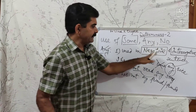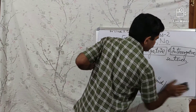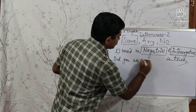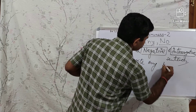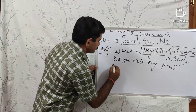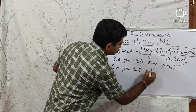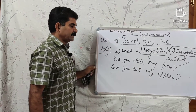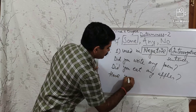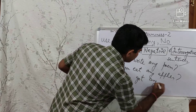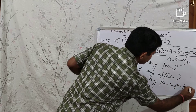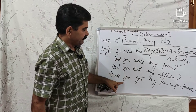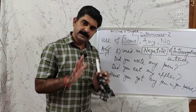Now with interrogative sentences: 'Did you write any poem?' 'Did you eat any apples?' 'Did you eat any apple?' 'Have you got any pen in your pocket?' With negative and interrogative sentences, we use ANY.